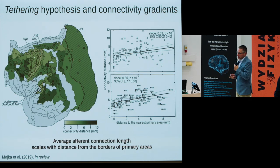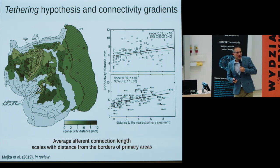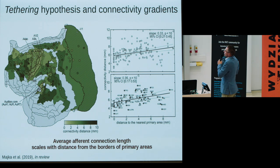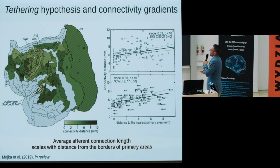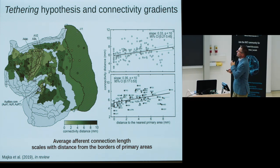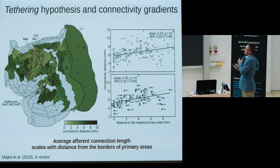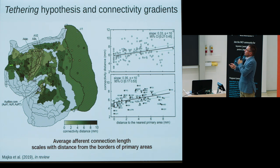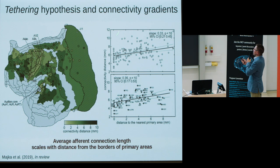We then took our marmoset tract-tracing data and conducted a very similar analysis, calculating the average connection length for each injection and for each cortical area. When we examine primary areas—outlined in black—a similar trend emerges, and this observation can be quantified and is quite robust.